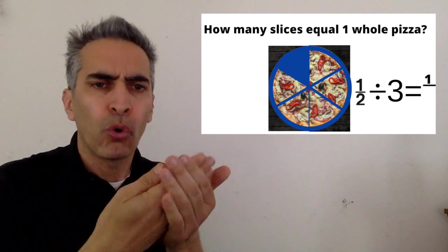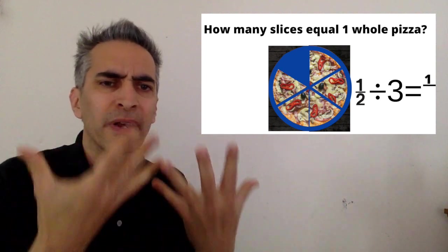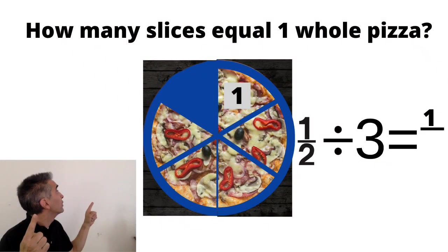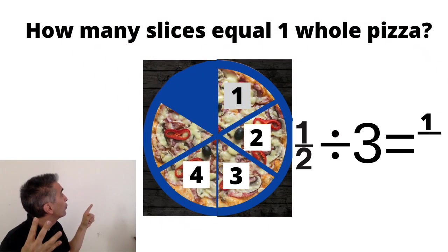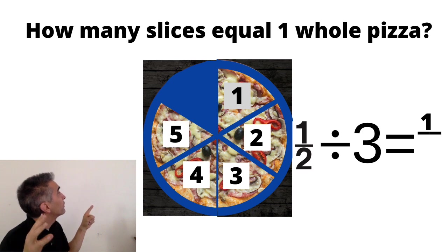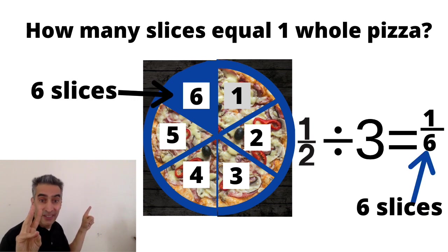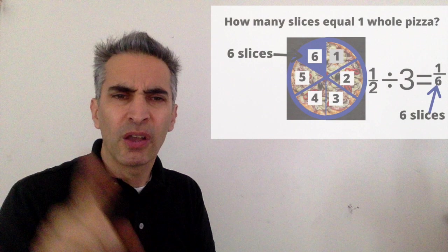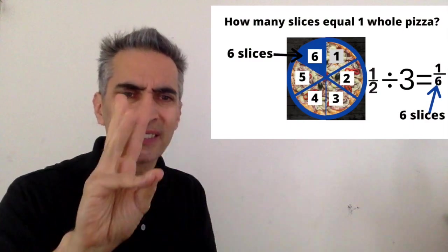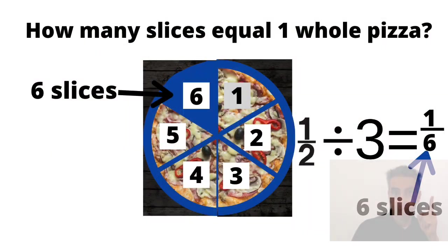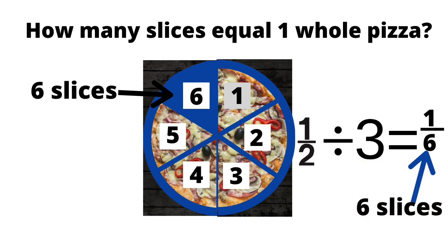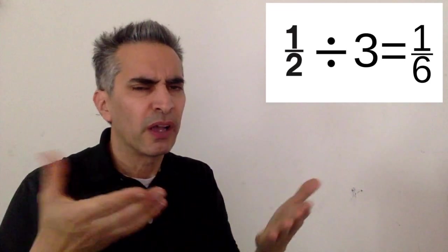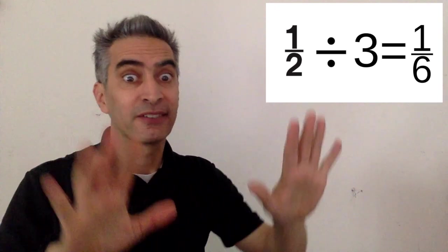How many slices equal one whole pizza? One, two, three, four, five, six. Where do you put the six? Right there in the denominator. The answer is one-sixth and we're finished.